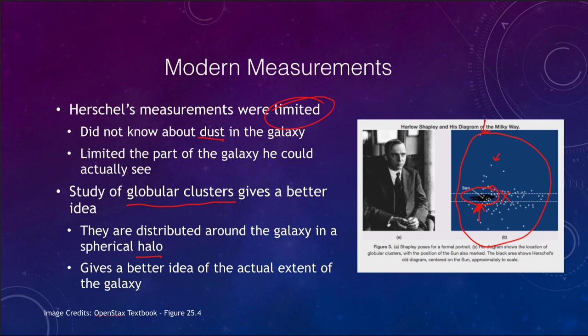Studying these globular clusters, Harlow Shapley was one who was able to do that. He was able to find that we are not near the center of our galaxy, as Herschel had found from his measurements, but we are actually well away from it.